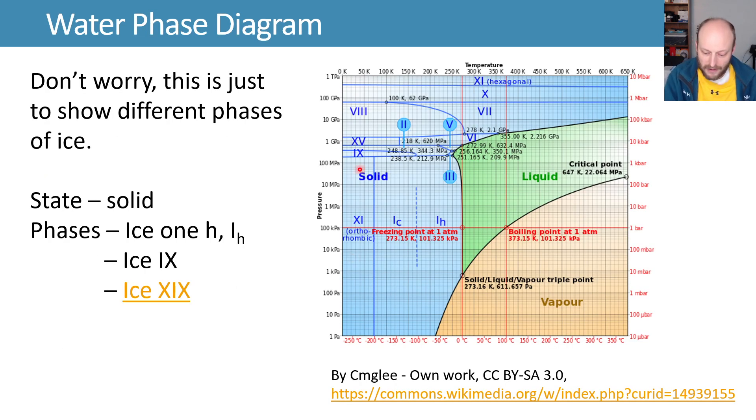For example, here is a phase diagram for water. Don't worry, you don't have to understand everything here. You've got pressure on the left—so up and down is pressure—and left and right is temperature. I just want to give an idea that in water you've got liquid water, and as you freeze it you get ice. But if you keep decreasing the temperature, the ice actually changes phase again, and you get this Ice XI as you get colder and colder, below negative 200 degrees Celsius.